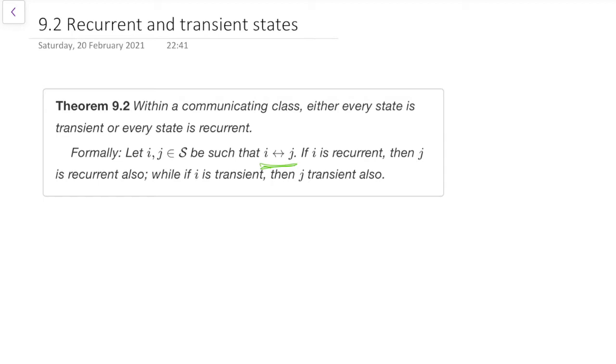So, before we were talking about transient and recurrent states. If we know that everything in the same class has the same one of those two properties, we can call the whole class a transient communicating class or a recurrent communicating class, which means that's a class in which every single state is transient, or that's a class in which every single state is recurrent.